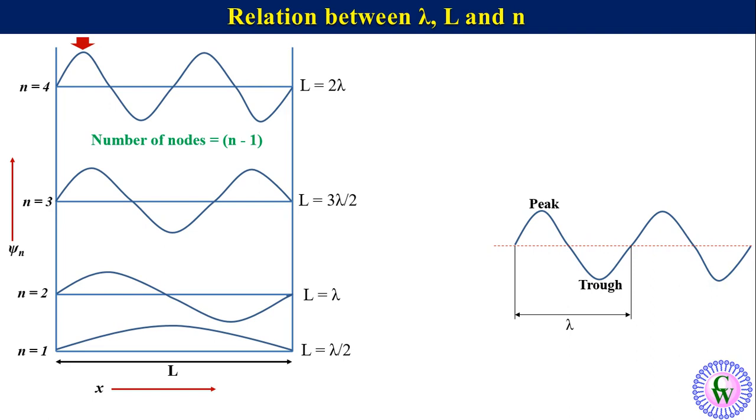We can write L equals lambda over 2 as 1 lambda over 2, L equals lambda as 2 lambda over 2, L equals 3 lambda over 2, and L equals 2 lambda as 4 lambda over 2.